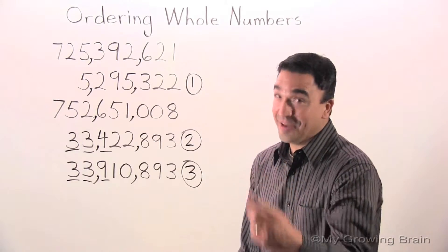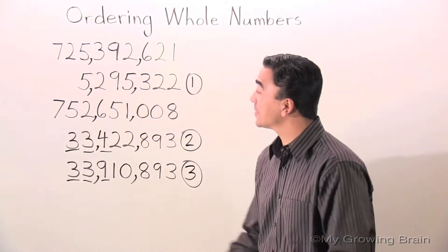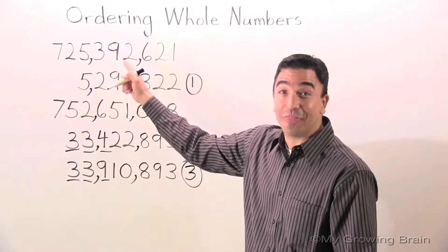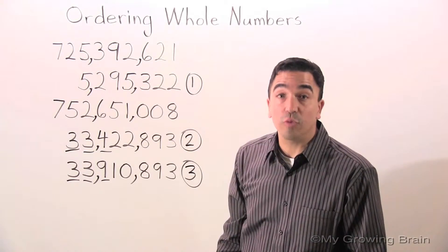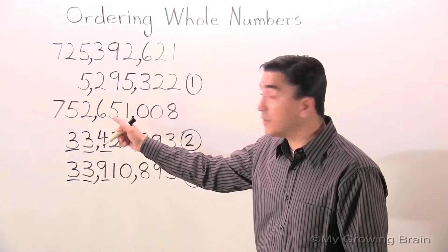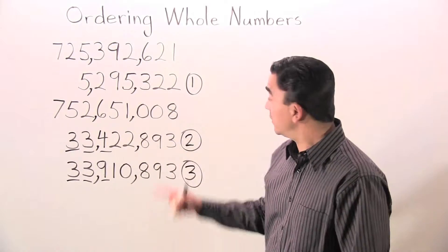Two more to go. You ready? Let's do it. Seven hundred twenty-five million, three hundred ninety-two thousand, six hundred twenty-one. Seven hundred fifty-two million, six hundred fifty-one thousand, eight.